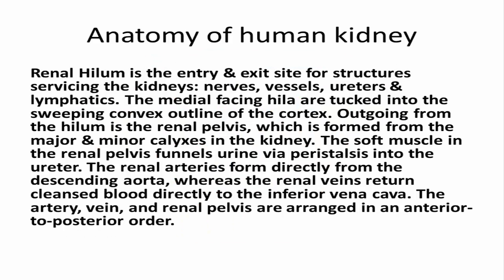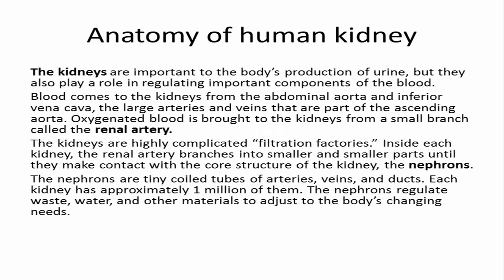The artery, vein, and renal pelvis are arranged in an anterior to posterior order. The kidneys are important to the body's production of urine, but they also play a role in regulating important components of the blood. Blood comes to the kidneys from the abdominal aorta and inferior vena cava, the large arteries and veins that are part of the ascending aorta. Oxygen-rich blood is brought to the kidneys from a small branch called the renal artery.